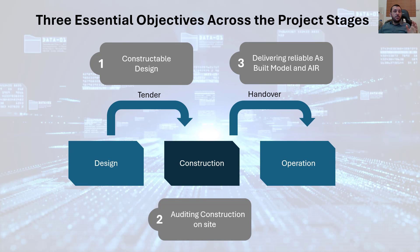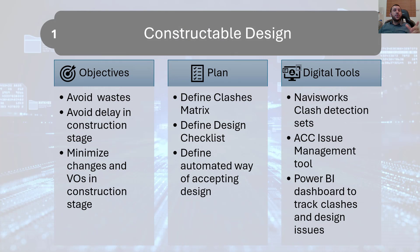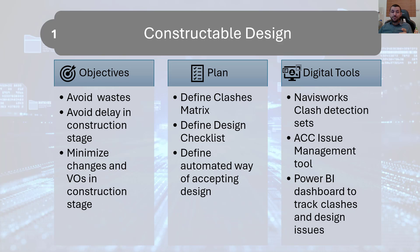Let's start with the first objective: constructible design. The goals are to avoid waste, avoid delays in the construction stage, and minimize variation orders. The plan is to minimize design issues and make the design more reliable: define clash matrices, define design checklists, and define an automated way of accepting design. The digital tools we chose are: set up Navisworks clash detection sets to match our matrix, implement the issue management tool in ACC or Autodesk Construction Cloud, and use a Power BI dashboard to track clashes and design issues.